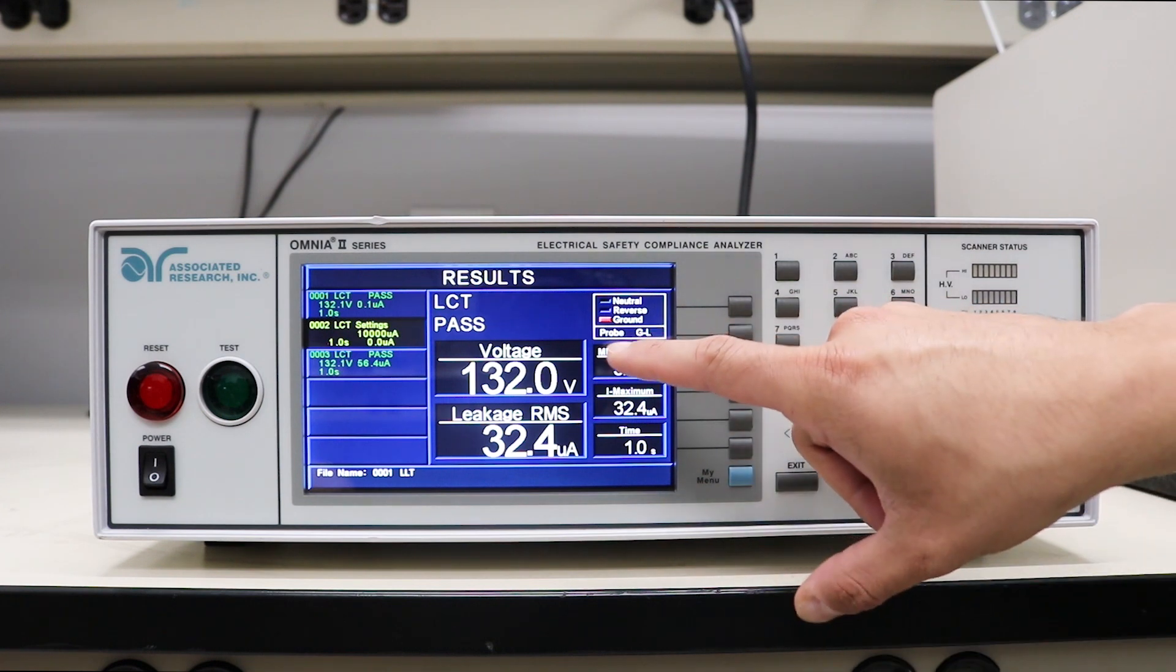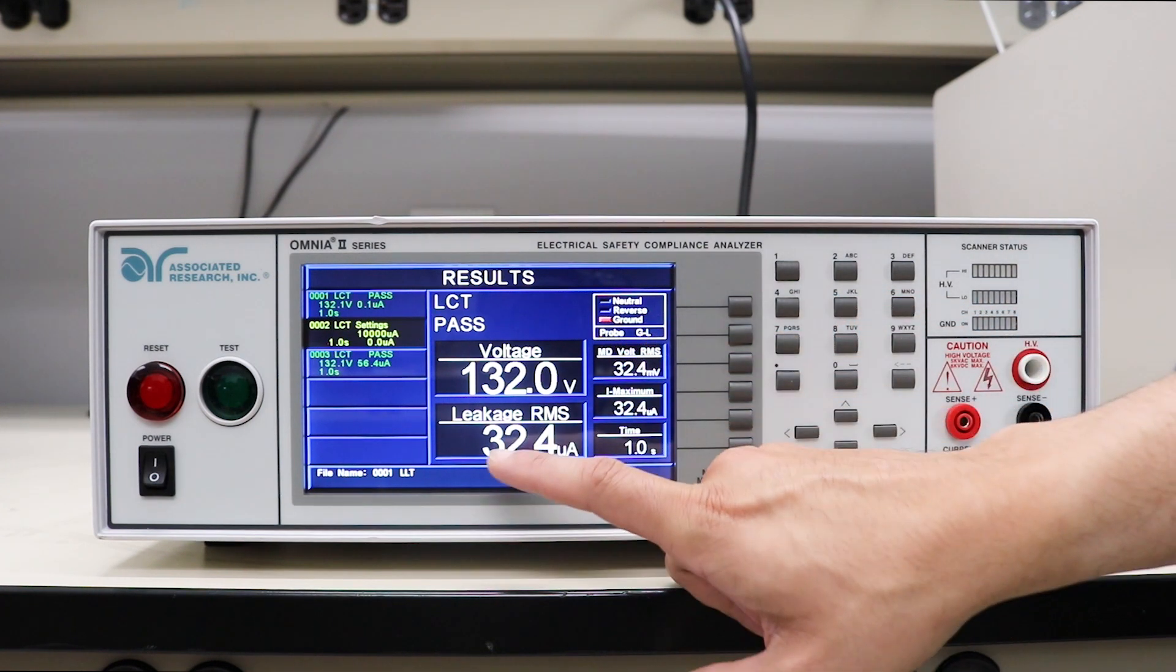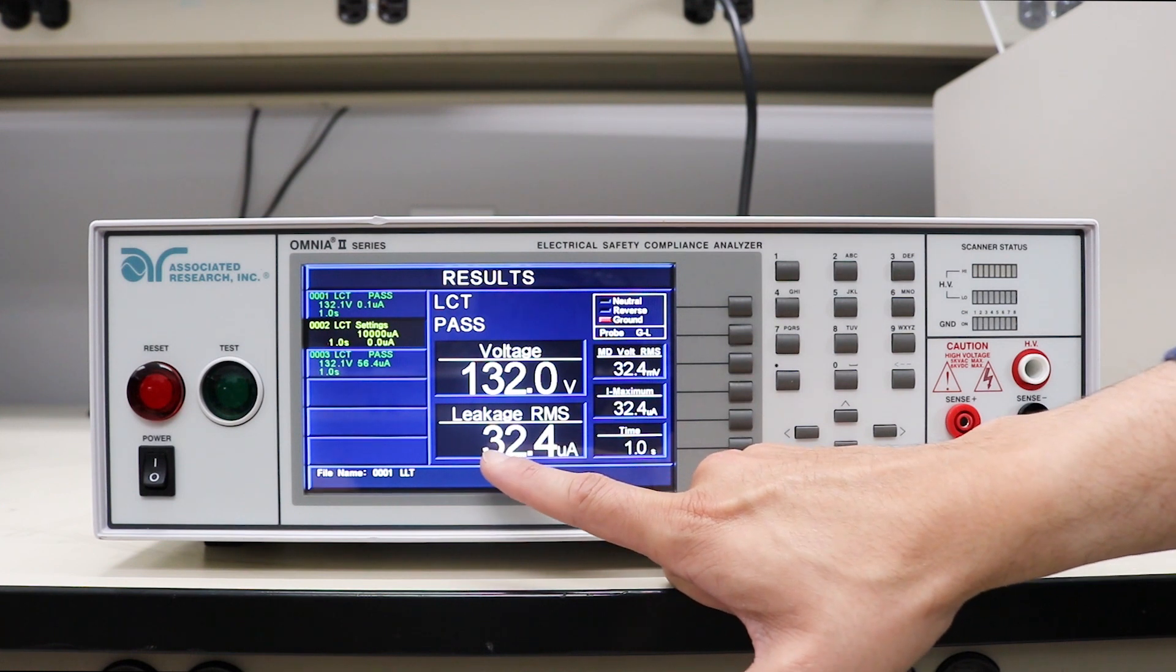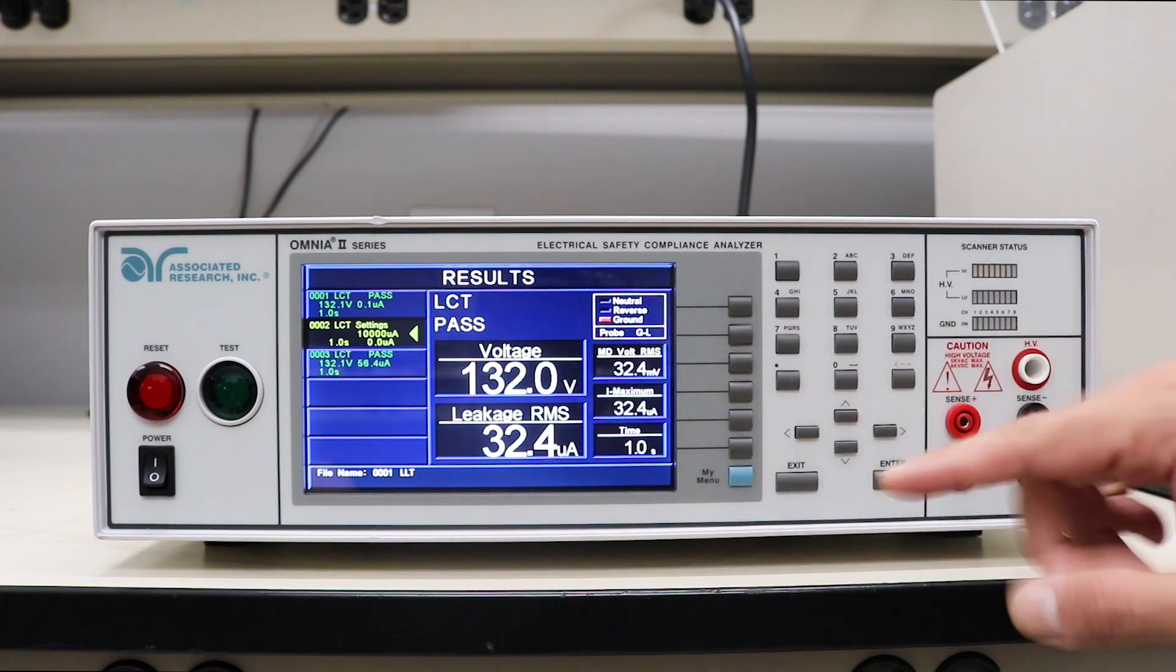In the next step we opened the ground and simulated an open ground condition. As you can see, the leakage current measurement went up quite a bit, all the way up to 32.4 microamps.